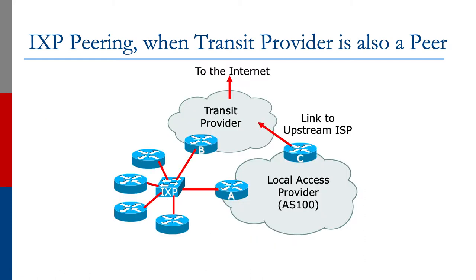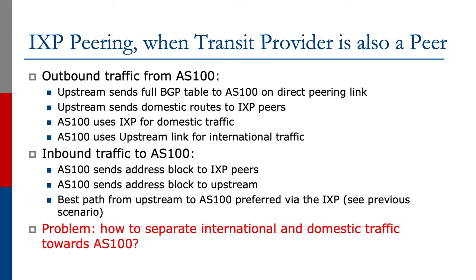So how do we ensure that transit traffic only goes on the transit link and peering traffic only goes on the peering link? The diagram shows the situation we're trying to resolve. The transit provider has the connection to the Internet. Router B peers at the Internet Exchange Point, the local access provider has router A also peering at the Exchange Point, and router C is the upstream connection to the transit provider. Outbound traffic is straightforward — the upstream sends the full BGP table to AS100 on the direct peering link, and also sends domestic routes to the IXP peers including AS100. So AS100 uses the IXP for domestic traffic and the upstream link for international traffic.